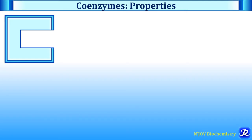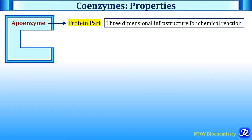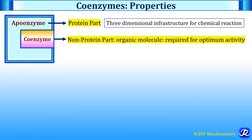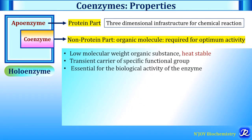Now let us see the properties of coenzymes. Holoenzyme is made up of apoenzyme plus cofactor, and if the cofactor is organic, it is called as coenzyme. Apoenzyme is the protein part of holoenzyme, responsible for three-dimensional infrastructure required for chemical reaction. The coenzyme is the non-protein organic part required for optimum activity of the enzyme. The coenzyme is a low molecular weight organic substance, it is heat stable, and it is the transient carrier of specific functional groups essential for biological activity of the enzyme.